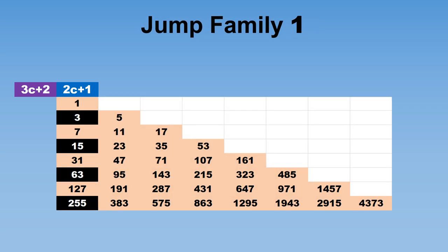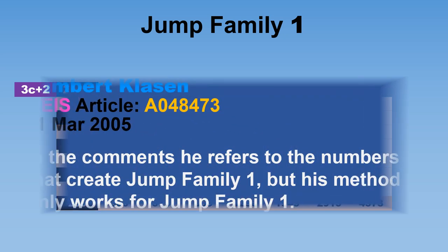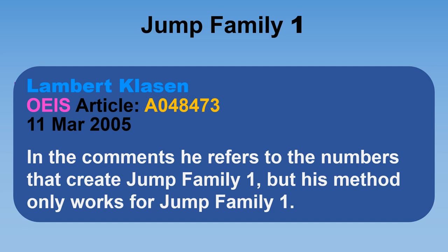Now, I do not claim to be the first person to find jump family 1. We may never know who did, but here is an example of someone who did. Here is the problem: his equations for generating the leads and the diagonals only works for jump family 1. So it seems likely that he was unaware of all the other jump families. Or maybe he did know. But why tell you this? Because, like the title states: little known or undocumented facts.